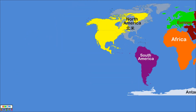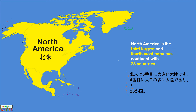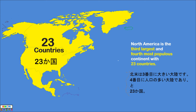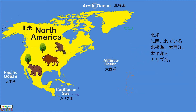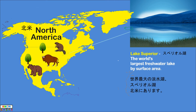North America is the third largest continent and the fourth most populous continent, with 23 countries. North America is surrounded by the Arctic Ocean, the Atlantic Ocean, the Pacific Ocean, and the Caribbean Sea. The world's largest freshwater lake, Lake Superior, is in North America.